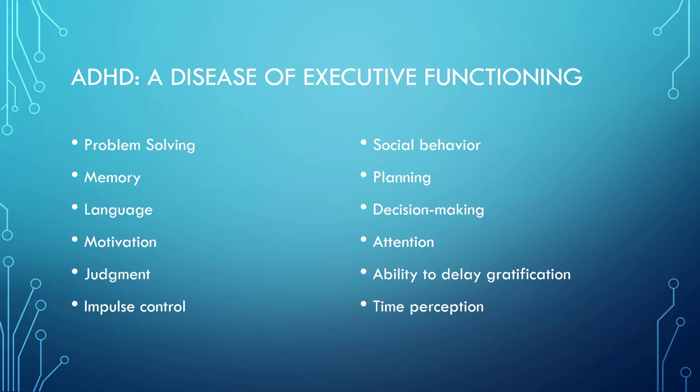ADHD is really a disease of executive functioning. Impairments in executive functioning may include: problems with problem solving; memory, especially short-term or immediate memory, otherwise known as working memory; language; motivation; judgment; impulse control; problems with social behavior; problems planning; problems with decision making; and difficulty delaying gratification. There is also a significant but little known problem with time perception. Persons with ADHD tend to have a difficult time estimating how much time is left and estimating where they need to be and how long it will take to get to the next destination.